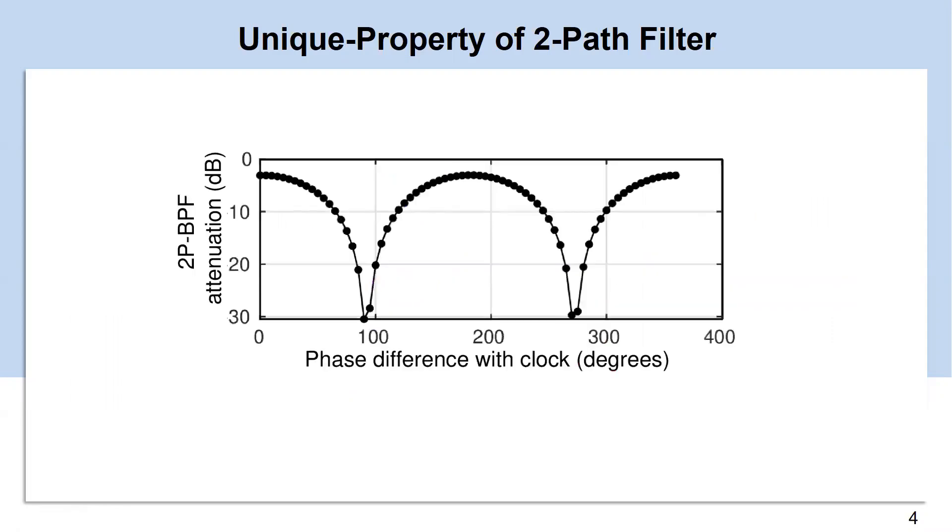This figure illustrates the effect of input attenuation of the two-path filter with respect to the relative phase alignment of the clocks. When the input and the clock frequencies are identical, it clearly shows that at 90 or 270 degree phase difference provides maximum attenuation.